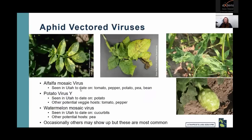The main concern with aphids is their virus transmission. Three main viruses in Utah that they vector are: alfalfa mosaic virus, seen on tomato, pepper, potato, pea, and bean; potato virus Y, seen primarily on potato in Utah but possible on tomato or pepper; and watermelon mosaic virus, seen on cucurbits in Utah and also possible on peas. There may be other viruses they vector, but these three are most common. The second winter webinar next month with Claudia Nischwitz will cover diseases in more depth.